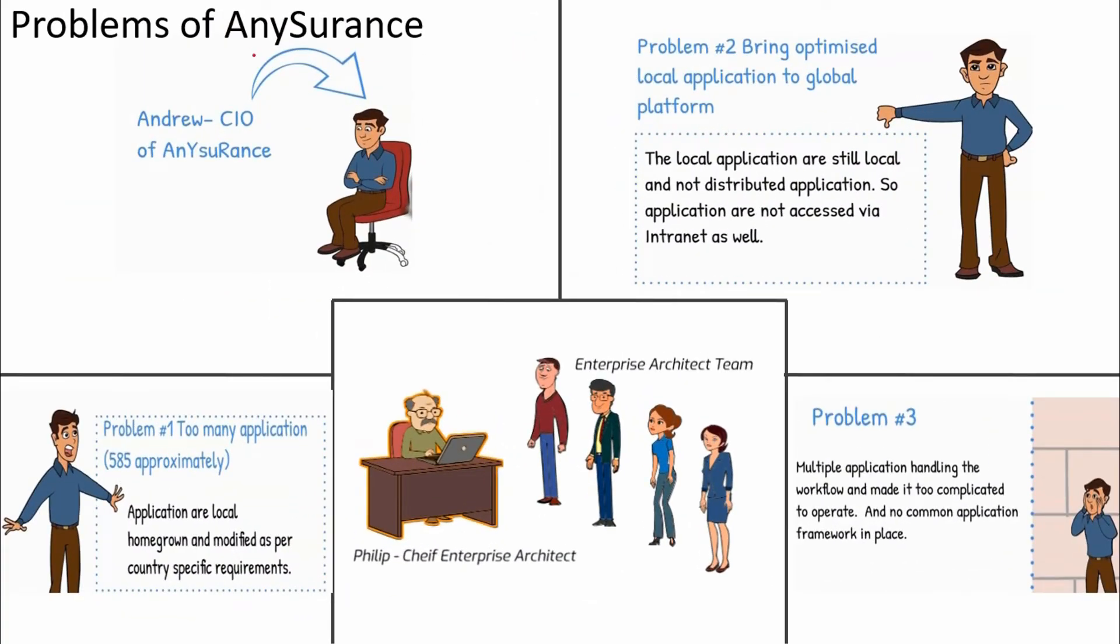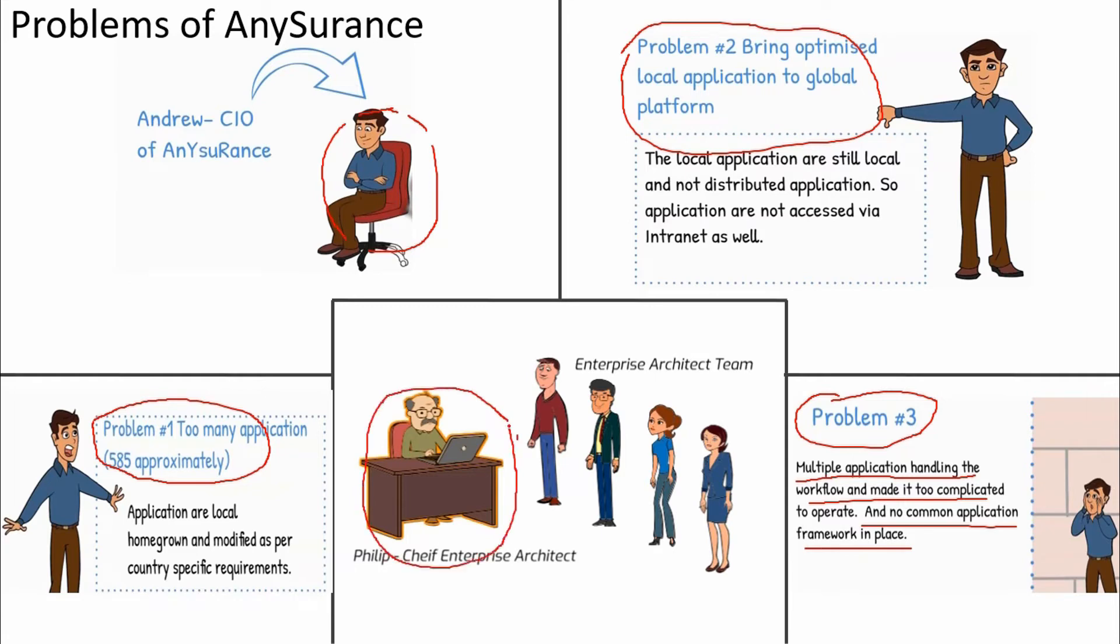Let's have a quick look at the problem we have discussed in the case study. Andrew the CIO is facing three problems at a high level that we need to solve. Problem one: his company has too many scattered applications in different countries doing similar tasks. Secondly, the applications are local and not distributed. The third problem he stated is multiple applications handling complicated workflow made the business harder and there are no common solutions built yet to handle this.